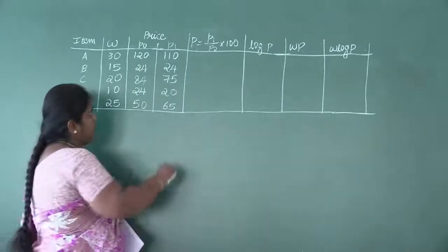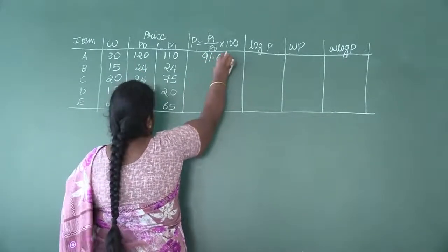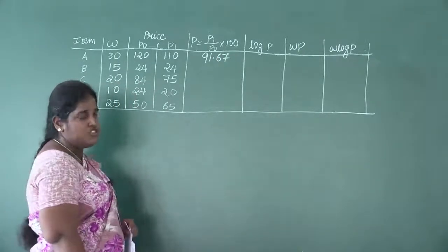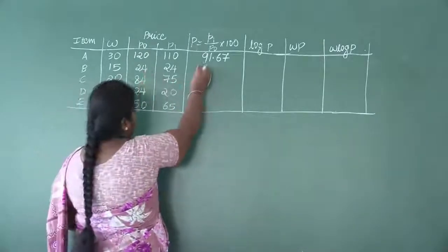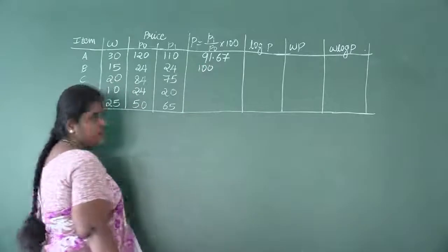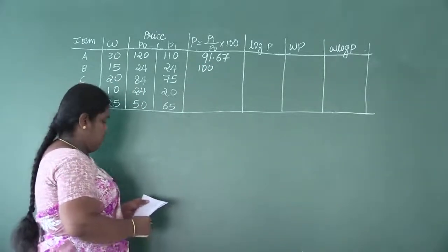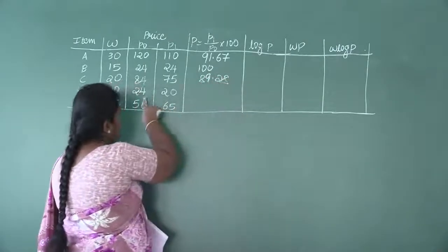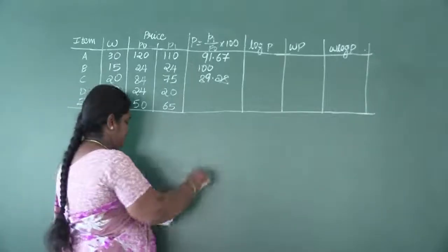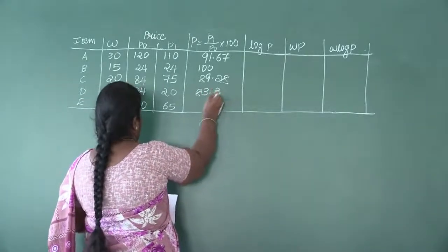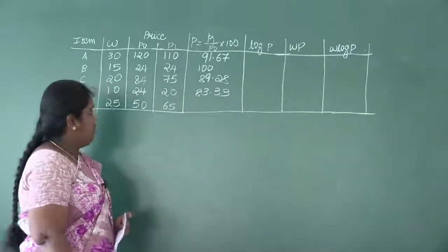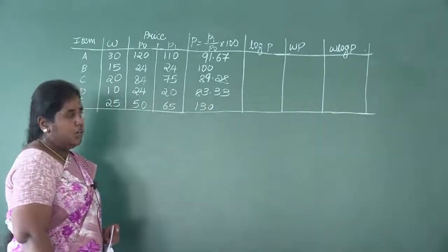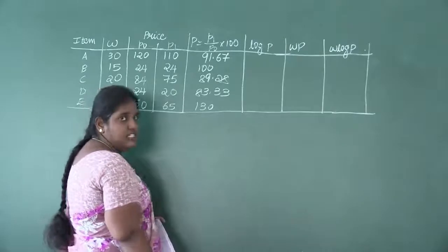Calculate price relatives. First item: 110 ÷ 120 × 100 = 91.67 (approximated to two decimal places). Next: 24 ÷ 24 × 100 = 100. Then: 75 ÷ 84 × 100 = 89.28. Next: 20 ÷ 24 × 100 = 83.33. Last: 65 ÷ 50 × 100 = 130.